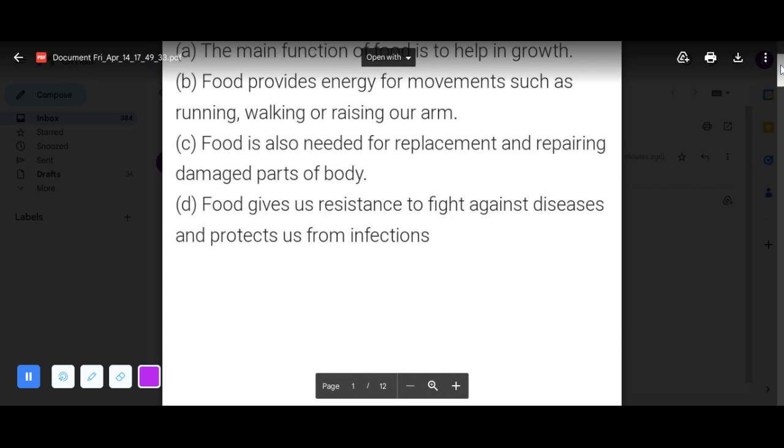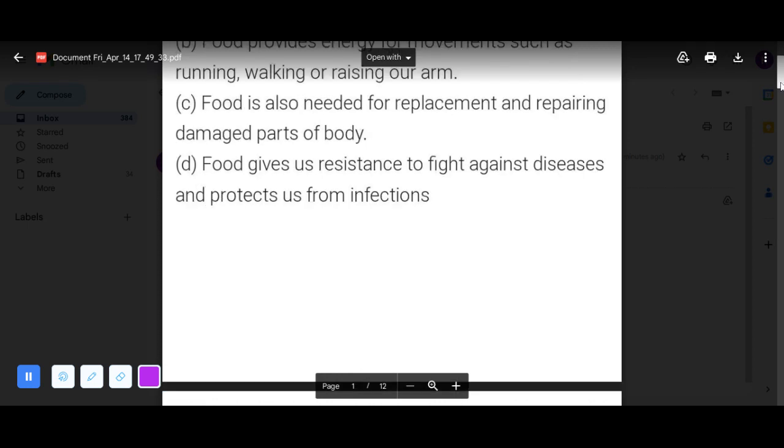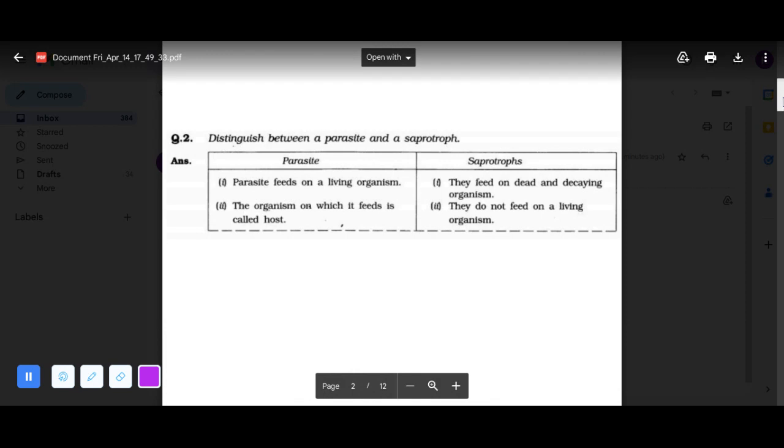Now question number two: distinguish between a parasite and a saprotroph. What is a parasite? Yes, parasite feeds on a living organism. The organism on which it feeds is called the host. Next is saprotrophs. What is saprotroph? They feed on dead and decaying organisms. They do not feed on a living organism.